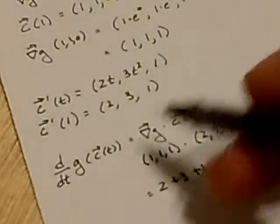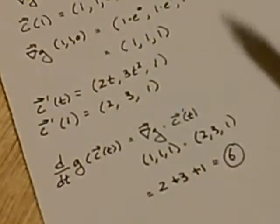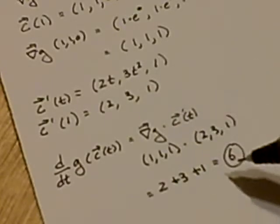So remembering that these derivatives at that point, at a particular time, is a number. We're taking a dot product, so it's a scalar, but if we evaluate that scalar function at a particular time, we will get a number.